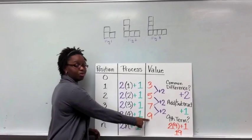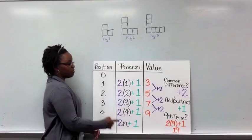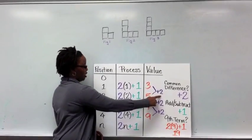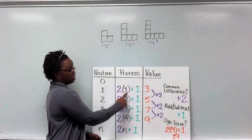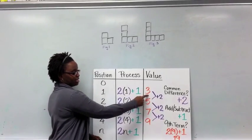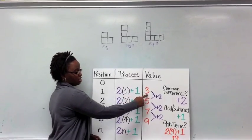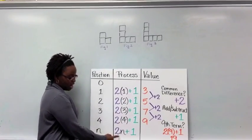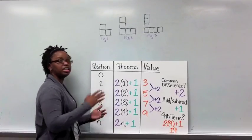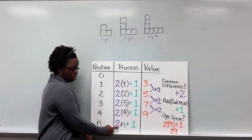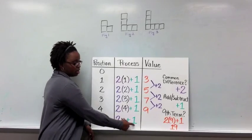Remember, to find our process, we're multiplying that common difference times our position, and then adding or subtracting to get to that value. So here, 2 times 1, and we've got to add one more to get to 3. And so we have the common rule here that we could use for any figure, any position, 2 times n plus 1.